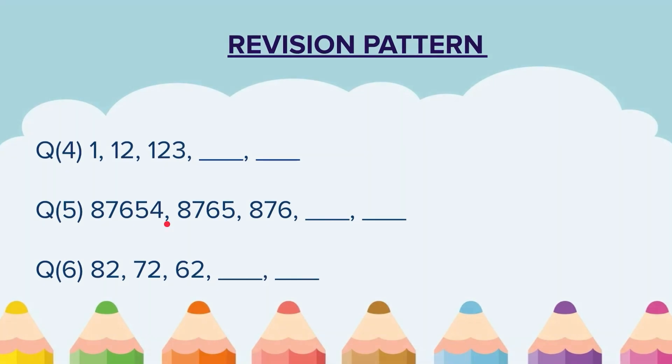Question 5. The first sequence is: 8, 7, 6, 5, 4. The next sequence is: 8, 7, 6, 5. The sequence after that is: 8, 7, 6. Write the next two terms.